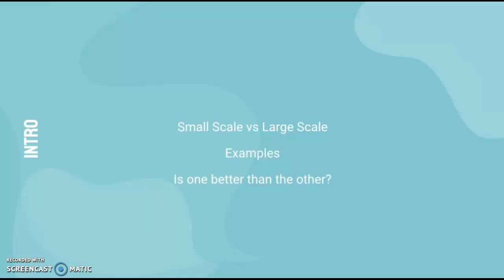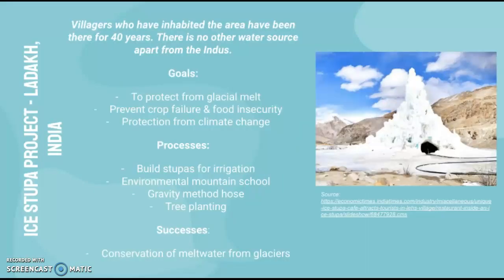Let's look at case studies. First, we have the Ice Stupa Project in Ladakh, India. Villages that have inhabited the area have been there for 40 years, and they have no other resource for water other than the Indus. The goals of this project are to protect from glacial melt due to climate change and prevent crop failure and food insecurity.